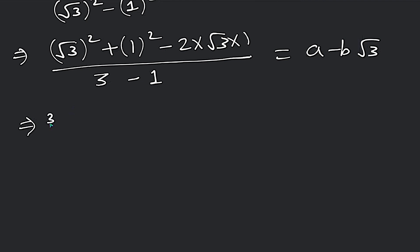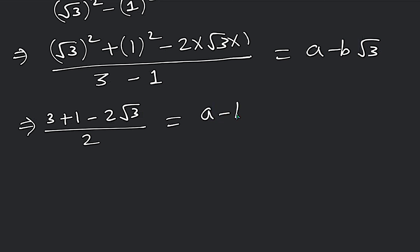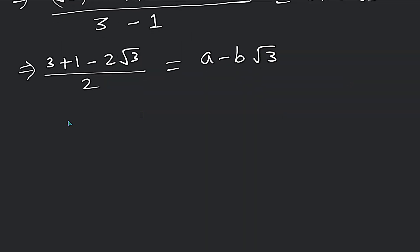As you can see, √3 squared gives 3, and 1 squared gives 1, and then minus 2√3. So the numerator becomes 4 minus 2√3, and the denominator is 2.